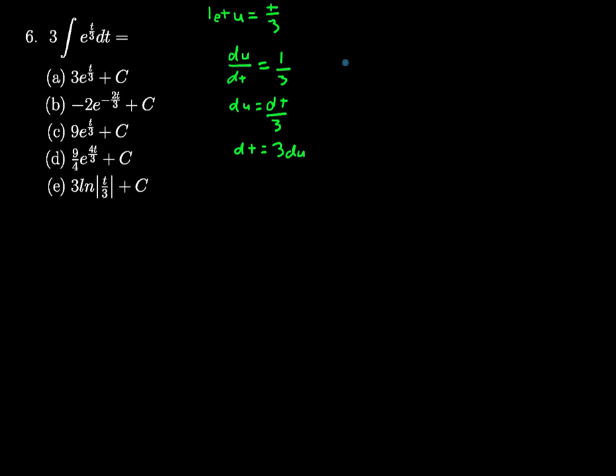Now I can substitute: t over three will be replaced by u. So I get that the integral equals three times the indefinite integral of e to the u, and I can replace the dt with three du, so times three du.